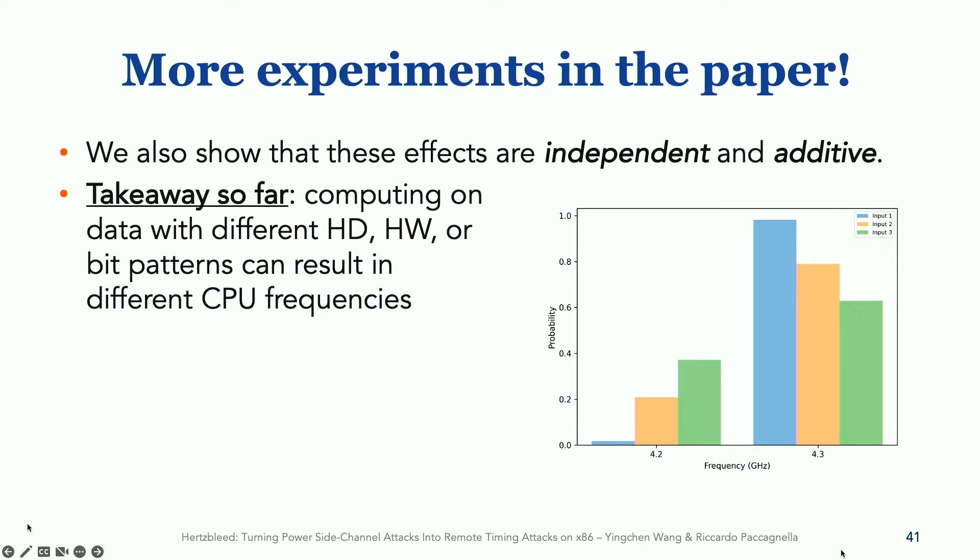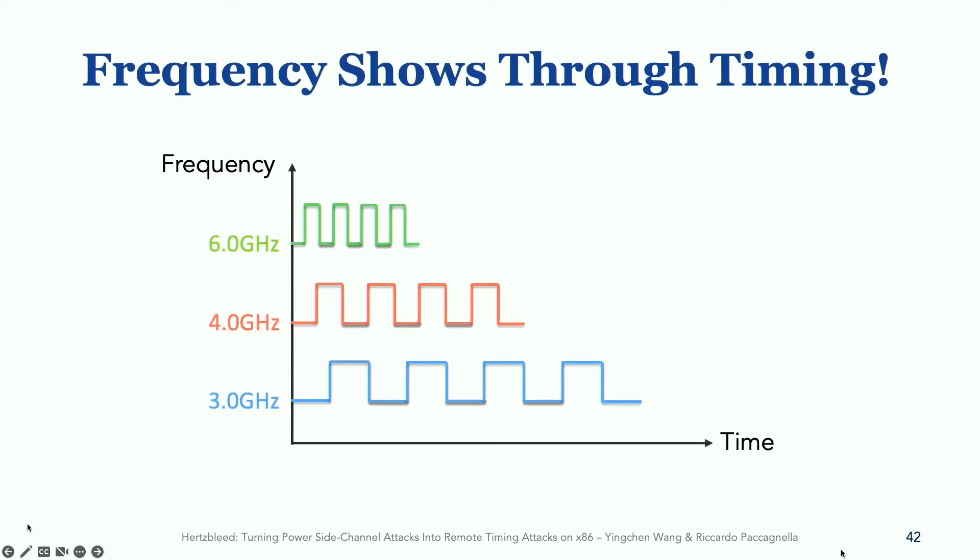So in the first part of the talk, we see that CPU frequency depends on data being computed on. Why is it even possible to mount this via remote timing? The reason is very simple. Because frequency and time are actually equivalent. For a constant cycle program, for inside this case, the higher the frequency, the shorter the running time. The amount of cycle is always fixed, but we're running on modern Intel CPU with frequency scaling. It might not be real constant time.